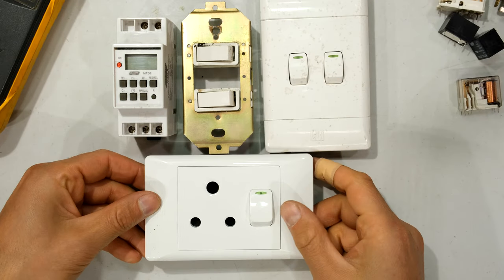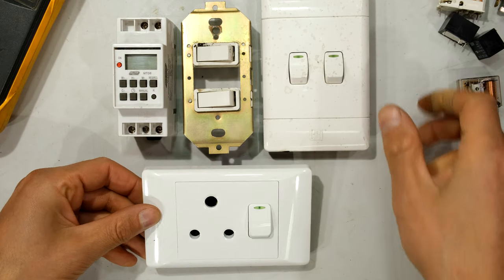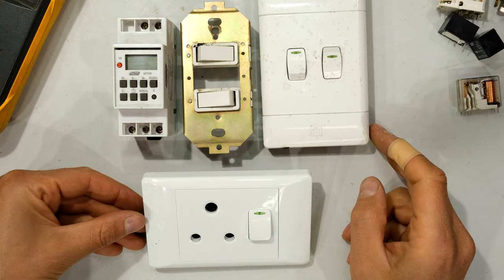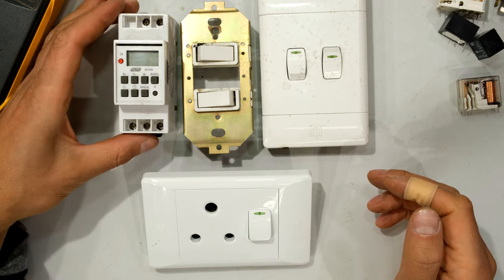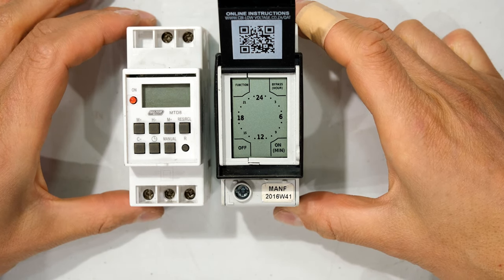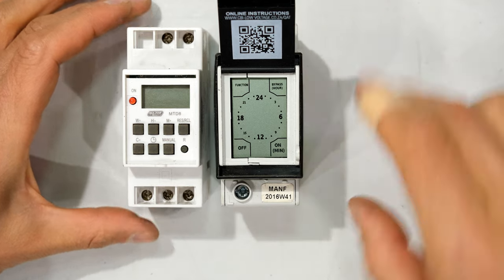So to switch on and off our appliances, we use switches - switching on and off lights. But what happens if we wanted to set it on a timer? Then we would use a relay. So over here I've got two examples of what people call timer switches, but inside there's actually a relay.